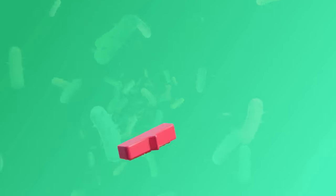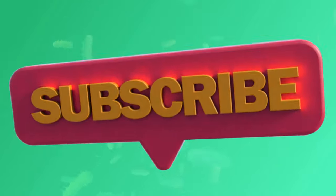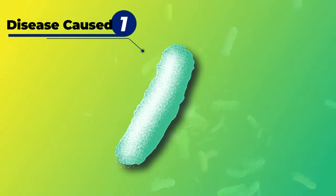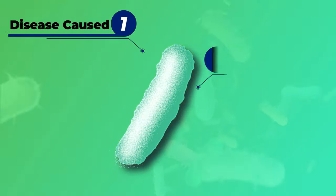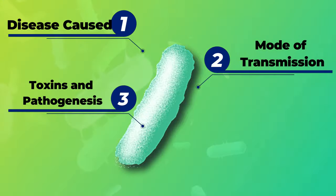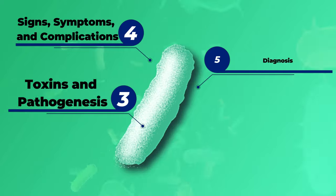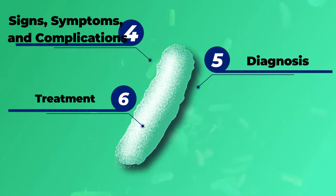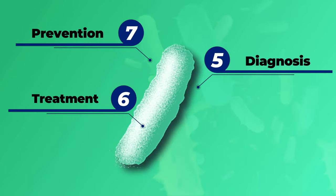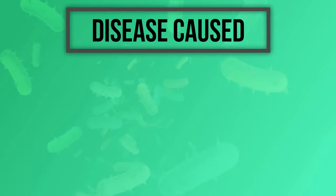Now let's begin our chapter covering: disease causation, mode of transmission, toxins and pathogenesis, signs, symptoms and complications, diagnosis, treatment, and prevention.